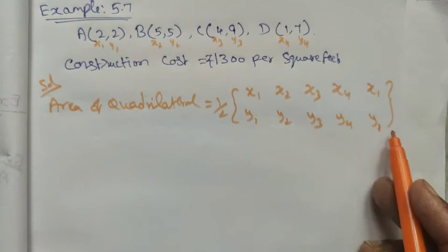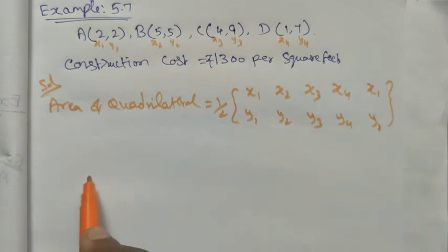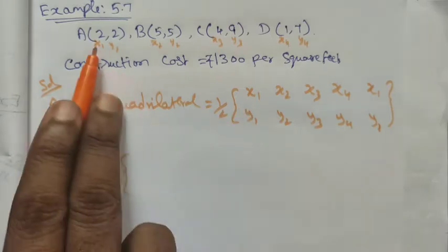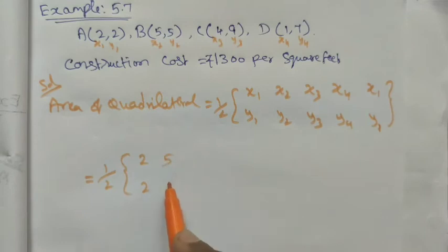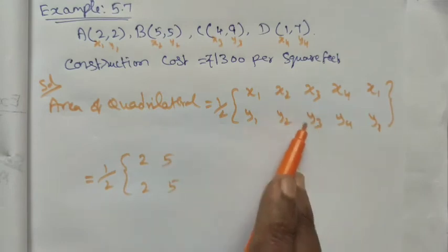And then area of the quadrilateral, we have the square units. This term is equal to, I started here, 1 by 2 into now x1 y1 is 2, 2, x2 y2 is 5, 5, x3 y3 is 4, 9.